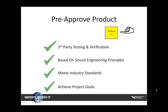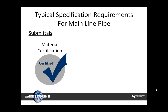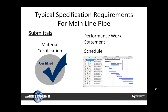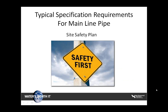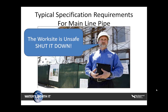What you're left with are products that have the best chance of success. Typically, an inspector will review submittals provided by the contractor and manufacturer, including material certifications, third-party testing data, the performance work statement, and a project schedule. Specifications will typically include safety items the contractor must follow. In some cities, the inspector has authority to shut down the job when the work site is unsafe; in other cases, the inspector documents and relays the information back to the city.